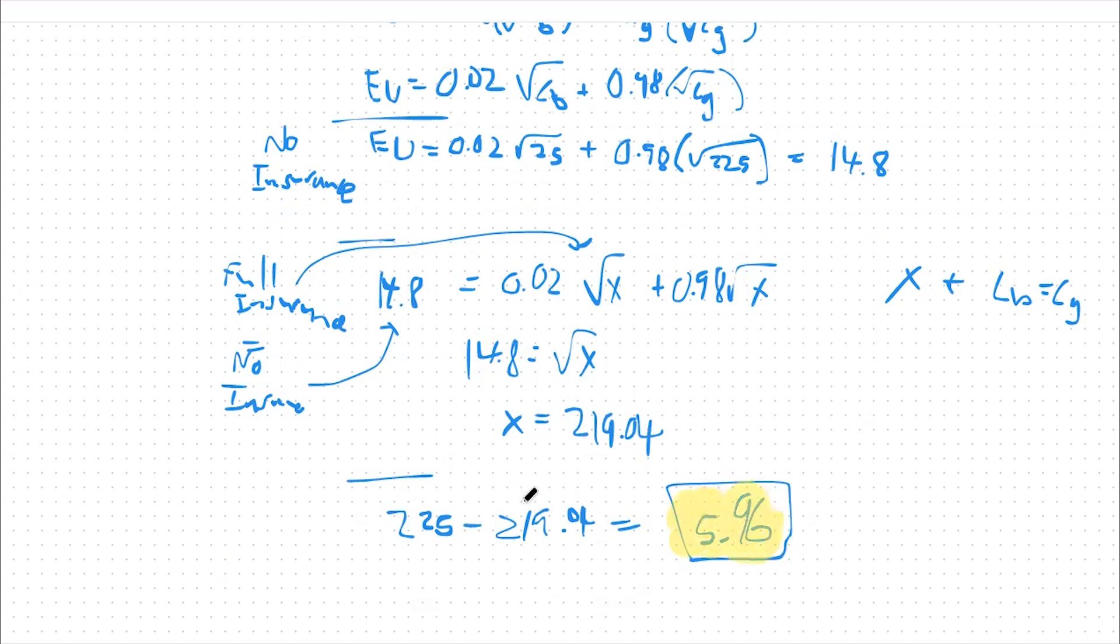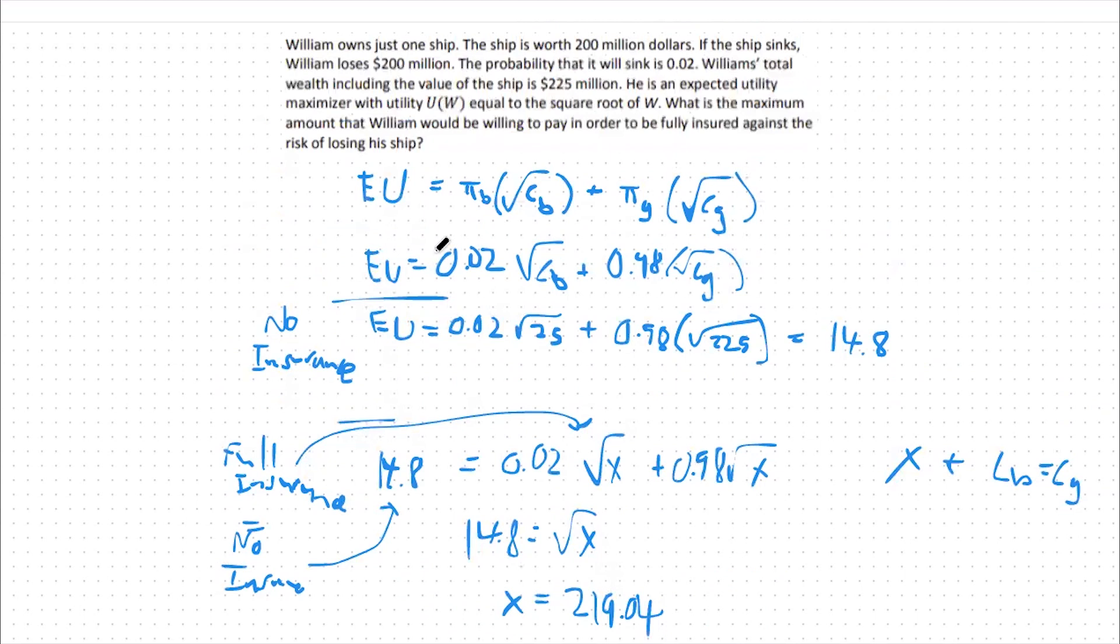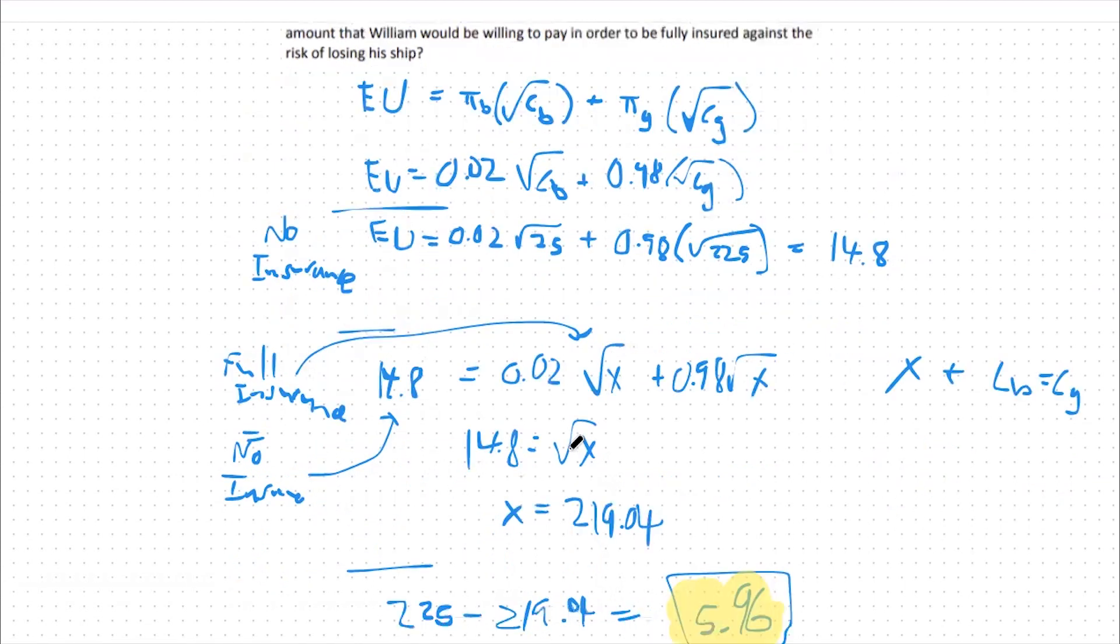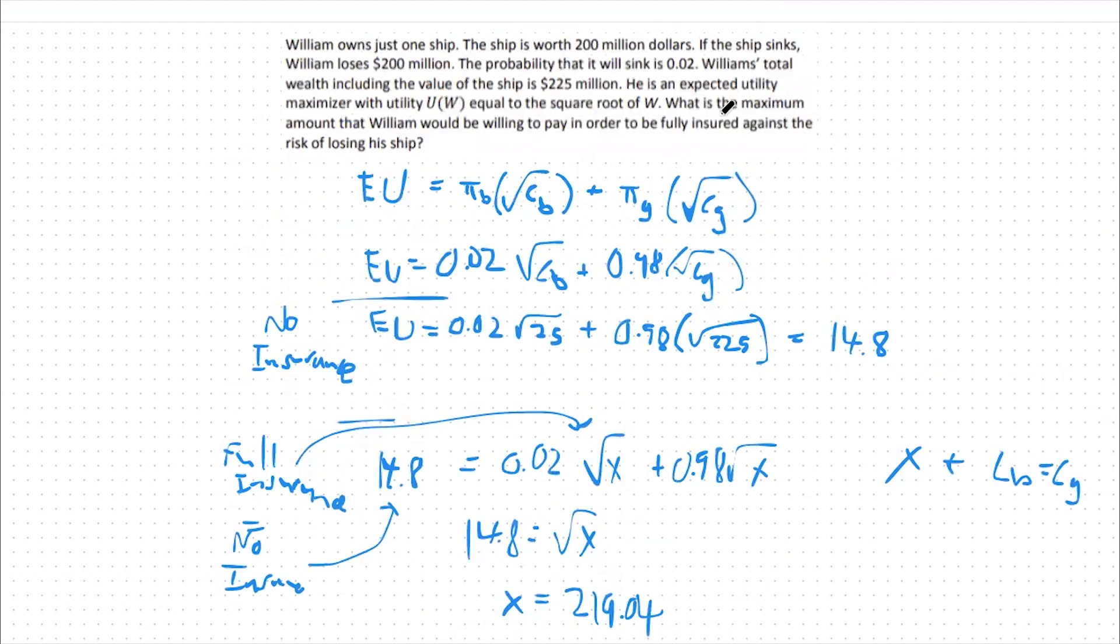To clarify, what we're saying is our expected utility under no insurance should be equal to our expected utility under full insurance. In the event that we are trying to maximize or find the maximum willingness to pay to fully insure.